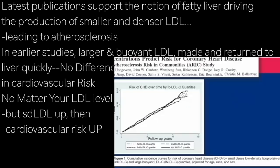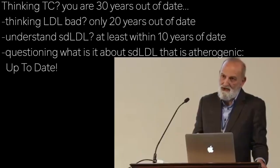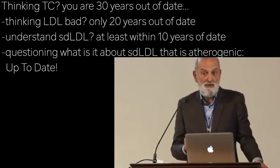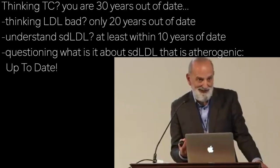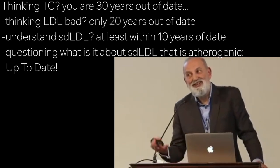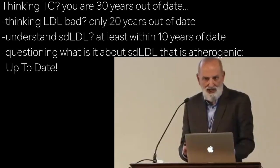In older studies — the YAREK studies — when you look at different types of LDL, if you've got the large buoyant LDL, the stuff made quickly that returns to the liver quickly, there's no difference in cardiovascular risk no matter what your LDL level is. But if you've got small dense LDL, there's a huge difference in cardiovascular risk. So I often say: anyone thinking in terms of cholesterol is 30 years out of date; anyone thinking in terms of LDL is 20 years out of date; understanding small dense LDL puts you within 10 years; and questioning what makes small dense LDL so atherogenic is truly up to date.